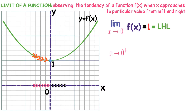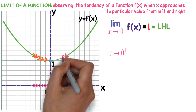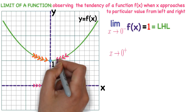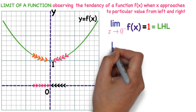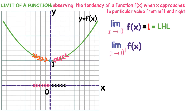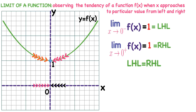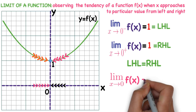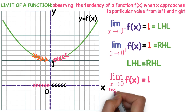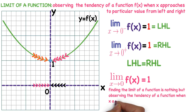Now observe x approaches to 0 from right. When x approaches to 0 from right, f(x) approaches to 1 from right as well. So the right hand limit of this function is also 1. Since left hand limit equals right hand limit, the limit of this function is 1. Finding the limit of a function is nothing but observing the tendency of a function when x approaches a particular value from left and right.